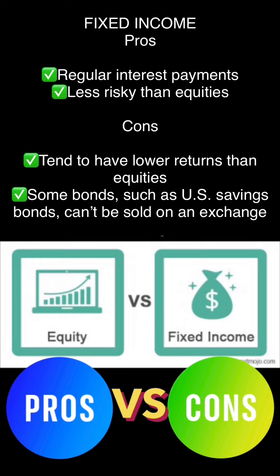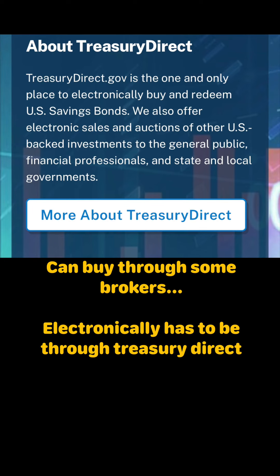Let's talk about some fixed income pros and cons. Pros: regular interest payments and they're less risky than equities. Cons: they tend to have lower returns than equities, and some bonds such as US savings bonds can't be sold on an exchange — you have to go through a specific platform. For more info on treasury bonds and US savings bonds, go to treasurydirect.gov. Some brokers also allow you to purchase them, but if you want to do it online, definitely check out treasurydirect.gov.